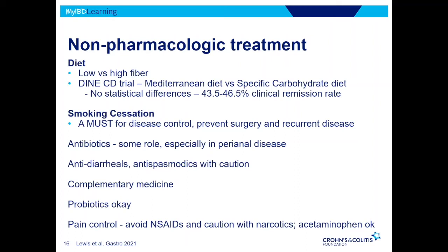Early data on infliximab or Remicade showed that if you didn't smoke, you had about a 75% chance of responding, but if you were a smoker, only a 25% chance — so smoking makes a huge difference in how you respond to biologics. We often use antibiotics mainly for perianal disease. Antidiarrheals like Lomotil or Imodium we'll introduce, but cautiously — we need a full understanding of what's going on in the GI tract first. Complementary medicine — I'm totally in support of it, actually. The caveat is you don't always know what's in the medicines, and claims are not always rigorously tested. From a probiotic standpoint, if you're going to go into complementary medicines, I think that's a good way to wade into it. For pain control, really try to avoid ibuprofen — it can increase the risk of flares. Narcotics have been shown to have worse outcomes, so we try to avoid those as well.